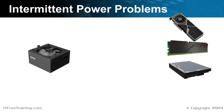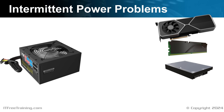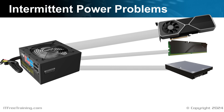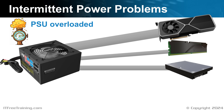Let's now have a look at intermittent power problems — problems that seem to occur randomly. The power supply provides power to the electronics in the computer. If the draw on the power supply is too great, the PSU can become overloaded. When this happens, generally two things will occur. The PSU circuit breaker may trip — this happens when too much current is being pulled through it. A malfunctioning component can start pulling more power than normal, or the computer could have too many components drawing more power than the PSU is rated to provide.